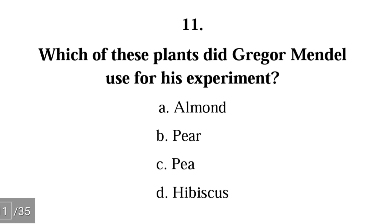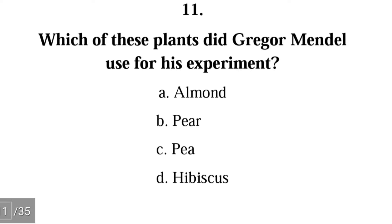Number eleven: which of these plants did Gregor Mendel use for his experiments — almond, pea, hibiscus? The correct answer is C — Gregor Mendel used pea plants for his experiments.